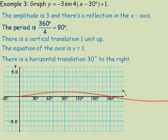This is a sine function, but instead of starting at the origin, there's been a horizontal translation 30 degrees to the right, so we place a dot at 30 degrees. The period is 90 degrees, so starting at 30 and going 90 beyond that brings us to 120 degrees, where the cycle ends.